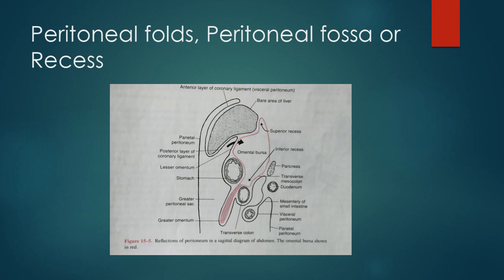Finally we come to peritoneal recesses. Peritoneal recesses are recesses between peritoneal folds or at peritoneal attachments. Here you can see the lesser omentum and the lesser sac behind the stomach, obliterated by fusion of the four layers of the greater omentum. There is a superior recess and an inferior recess — these are recesses or potential spaces formed because of the reflection of the peritoneum.